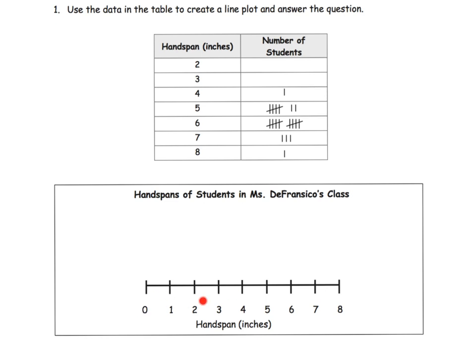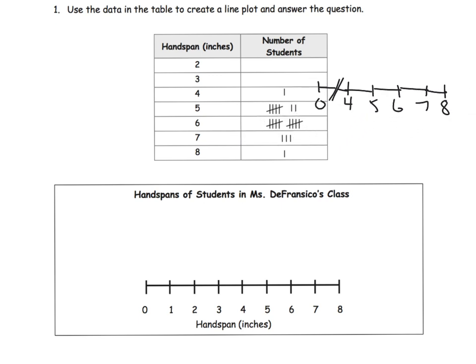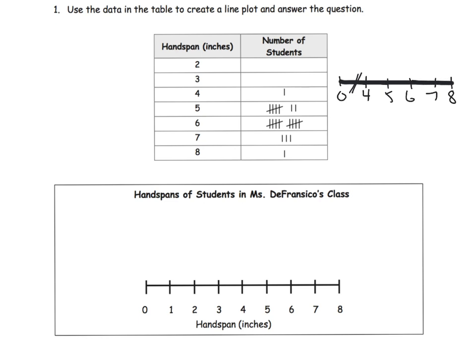You'll notice this particular line plot starts at zero and goes through eight, even though we don't have any data until four. If we wanted to, we could have started at zero, then used a dash-dash to indicate skipping numbers, and then started at four, five, six, seven, eight. That little dash-dash says we've skipped some numbers and we're going straight to four. But showing all the numbers is also perfectly fine.